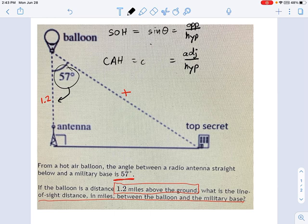SOHCAHTOA, remember? So cosine of theta equals the adjacent over the hypotenuse. That means cosine of 57 degrees equals 1.2 divided by x.